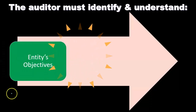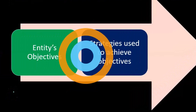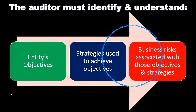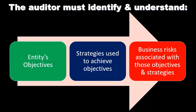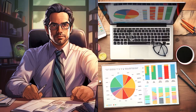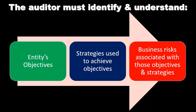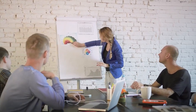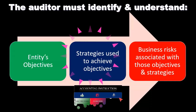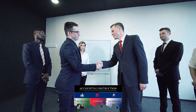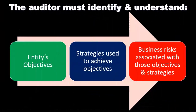The auditor must identify and understand the entity's objectives, strategies used to achieve those objectives, and business risk associated with them. As we get this understanding of the business, the overarching question is: what is the entity's objective? Revenue generation would obviously be part of it. But what's their strategy, and what are they putting in place to reach that goal? We need to understand that to better audit the business, and assess the risks of the objectives and the strategies being implemented — whether more or less risky — as factors for determining what type of testing is needed in the audit engagement.